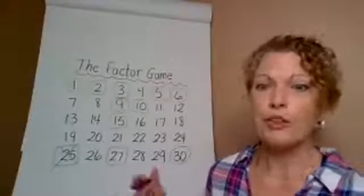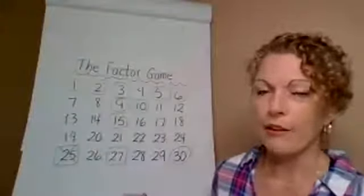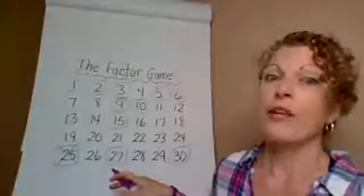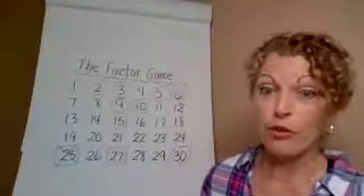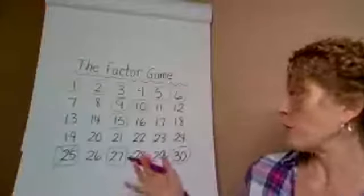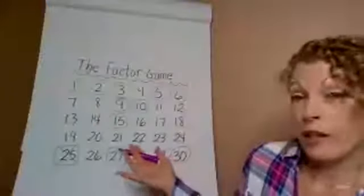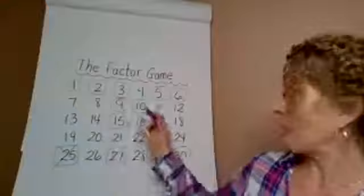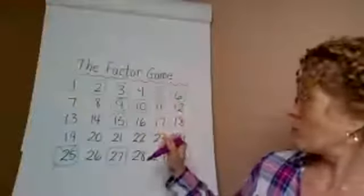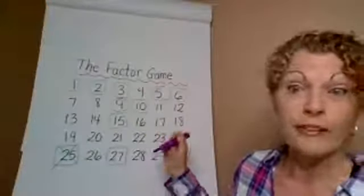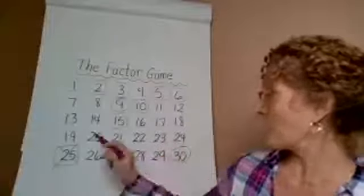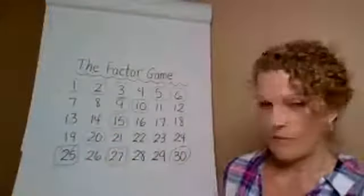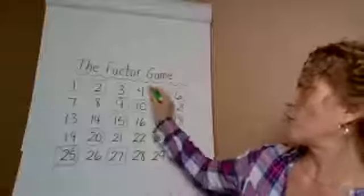And so at this point, they start to look a little bit more carefully and understand that they want to pick the highest number they can that has the fewest factors left over for me to have. So maybe at this point, they might go with 20. Because if they pick 20, I would get four. And I think that's all I would get. So they would probably choose that and their color was pink.